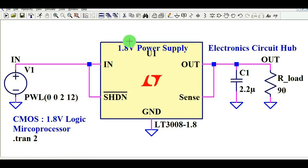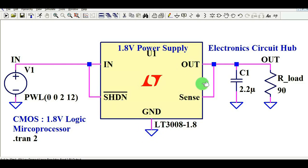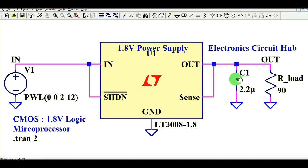In the simulation schematic, the input and shutdown pin are tied together and connected to the source voltage V1. The shutdown pin is active low. The ground pin is connected to ground. At the output, the sense pin is tied together with the output pin. A 2.2 microfarad ceramic capacitor is used for stable output. A 90 ohm load resistance is used so we can draw the maximum current of 20 milliampere.